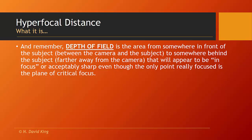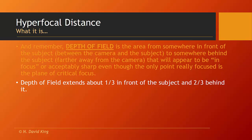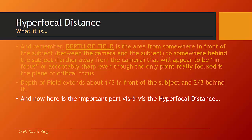It's also important to remember that depth of field is the area from somewhere in front of the subject — meaning somewhere between the camera and the point of critical focus — to somewhere behind the subject, meaning farther away from the camera. That area is going to appear to be in focus or acceptably sharp, even though technically the only point truly in focus is the plane of critical focus. Depth of field extends about one third in front of the subject toward the camera and two thirds behind the subject away from the camera.